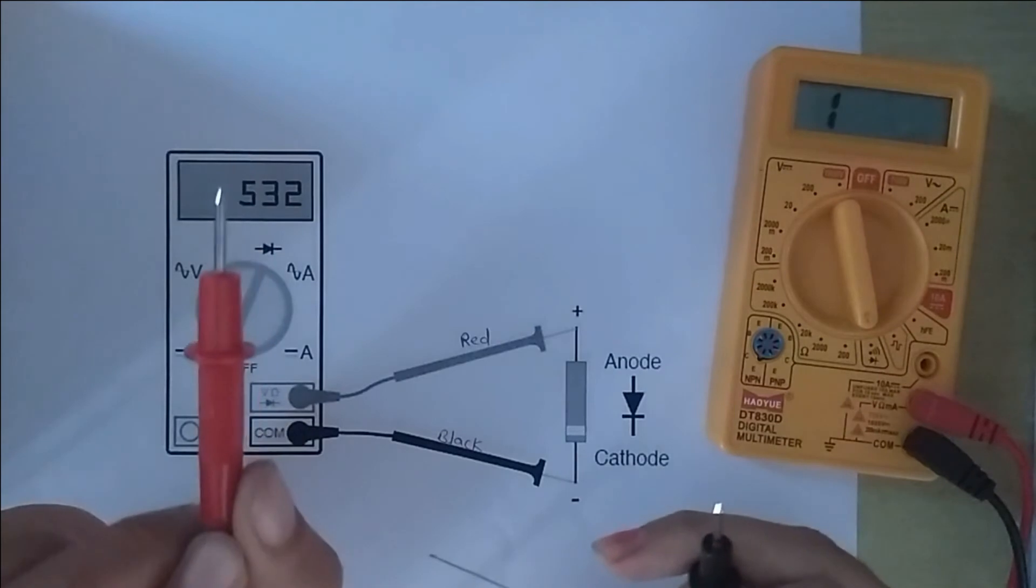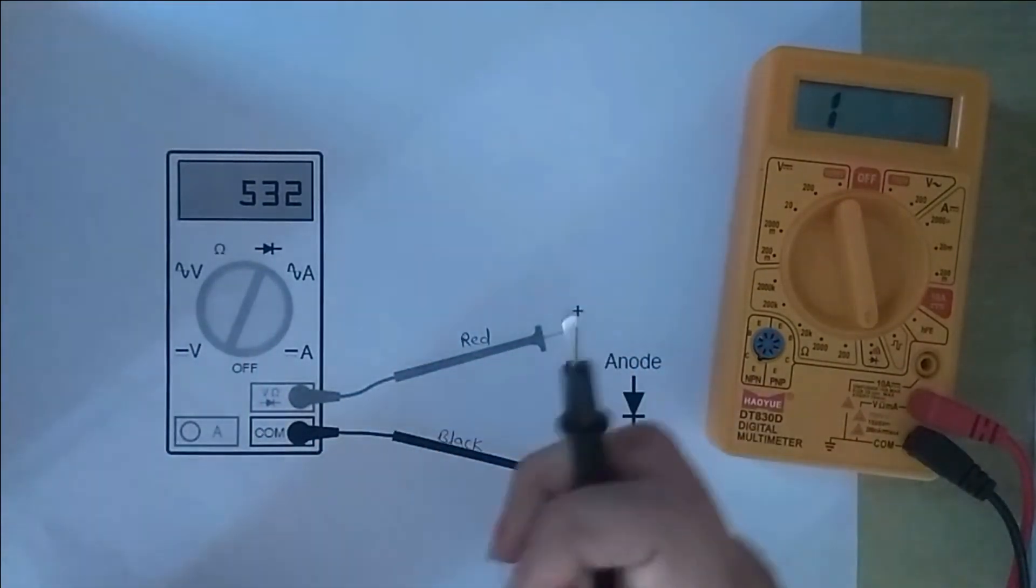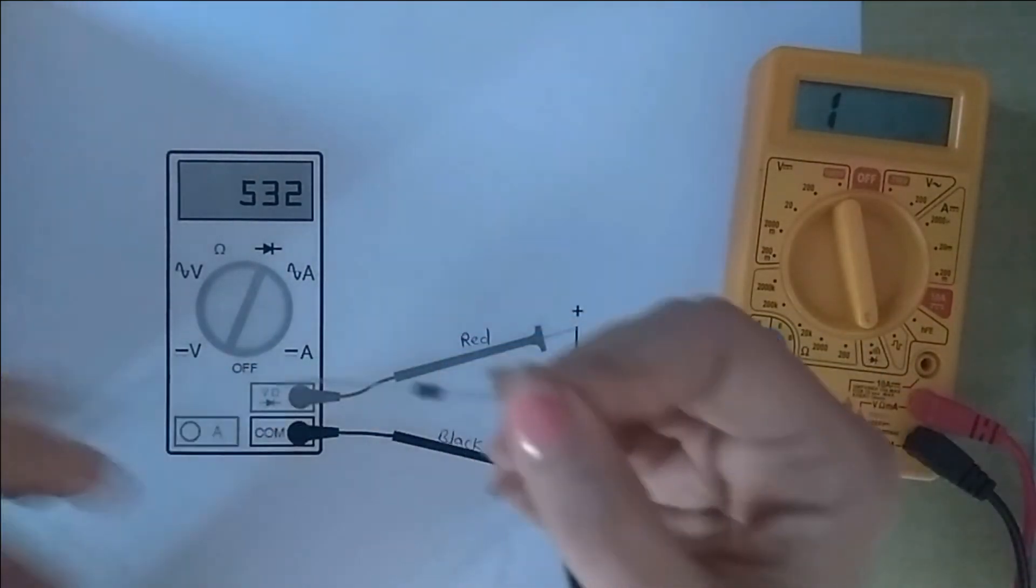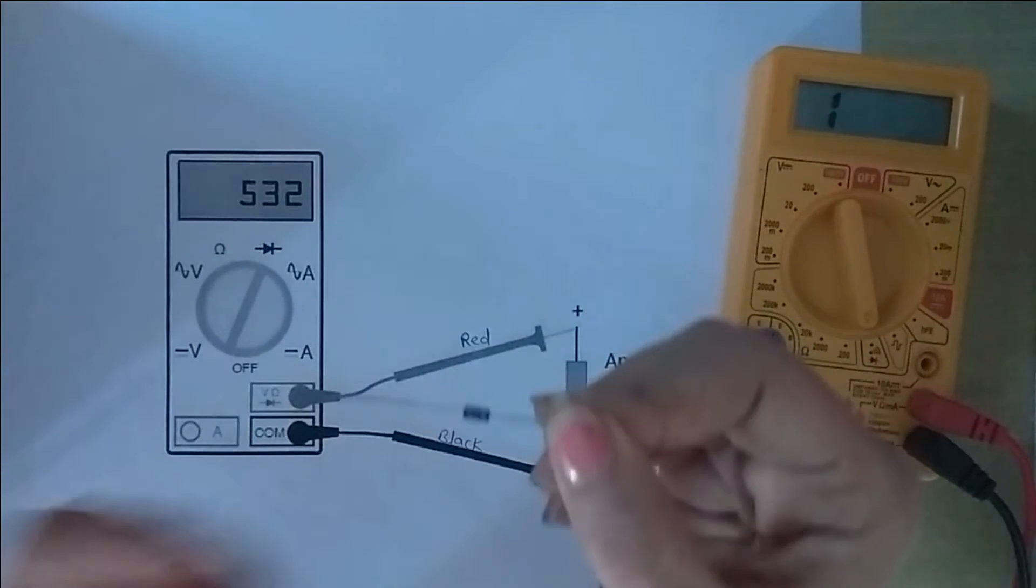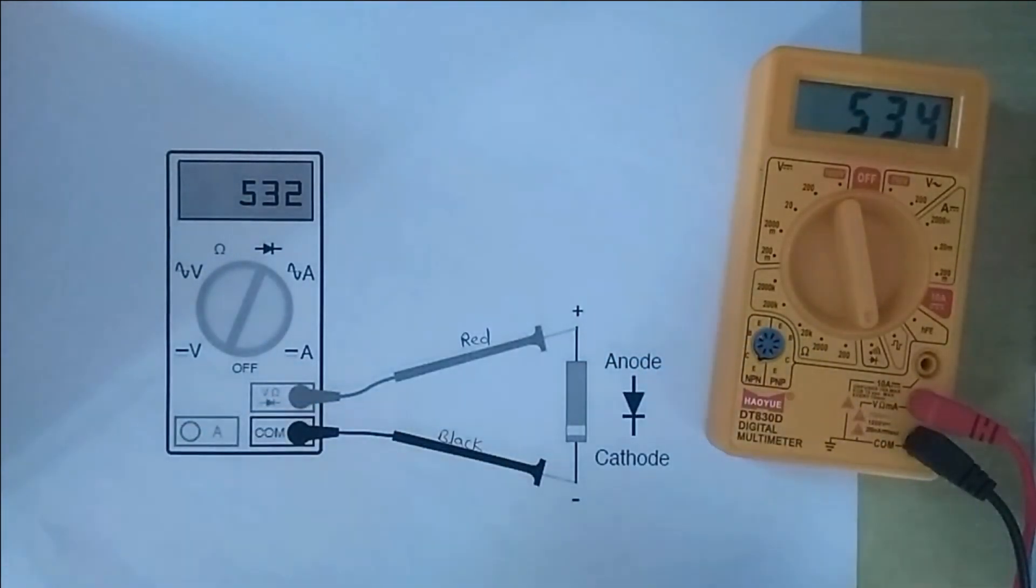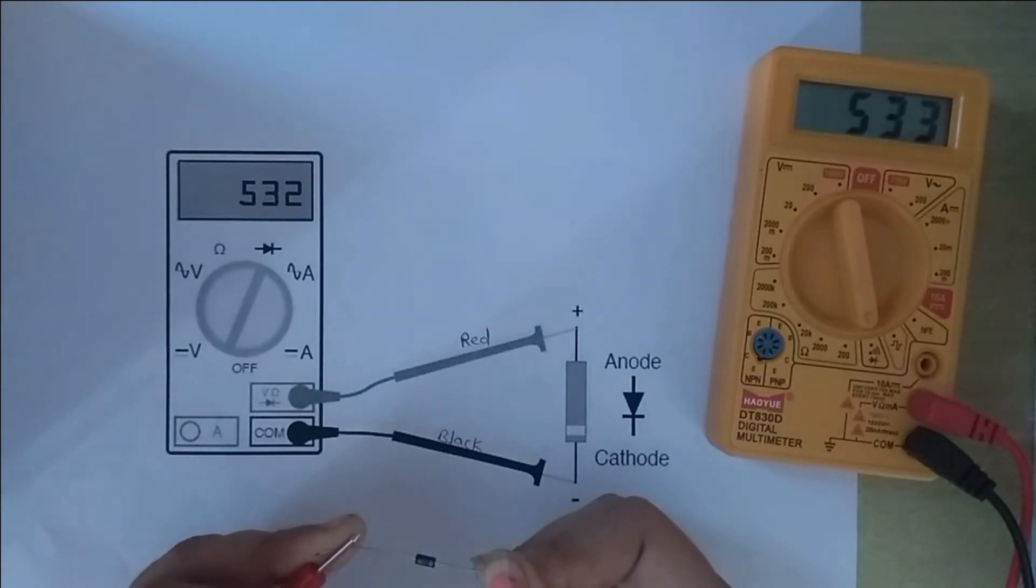The red probe represents the positive terminal and the black probe represents the negative terminal. I am connecting the black probe to the cathode and the red probe to the anode terminal. In this condition, the diode is in forward bias condition like shown in the diagram, and the meter will show a reading between 400 to 600 range. I am getting 533 reading, that means it is in forward bias condition.